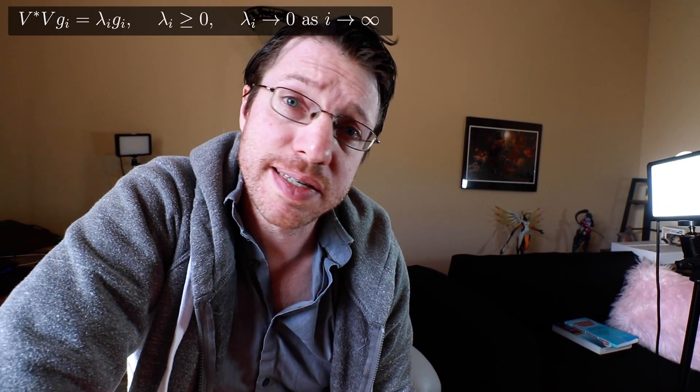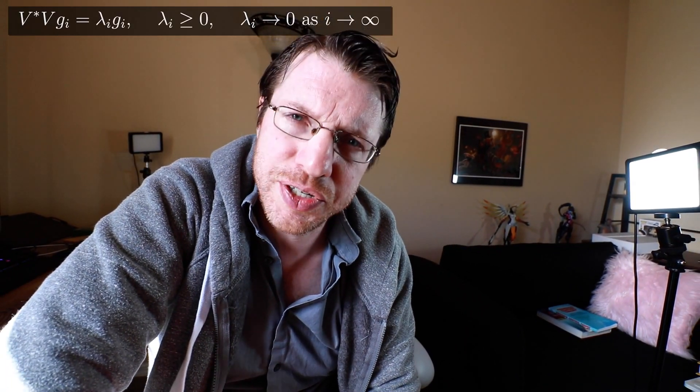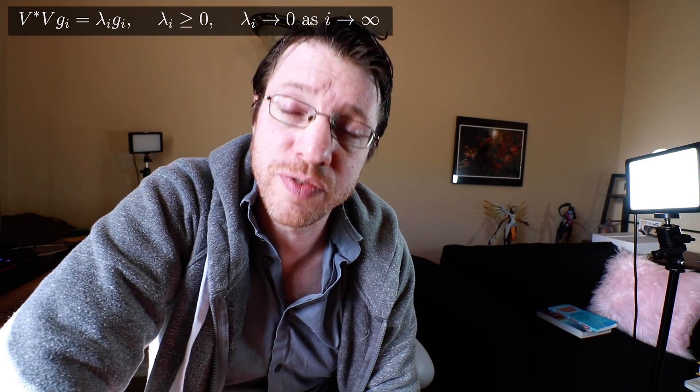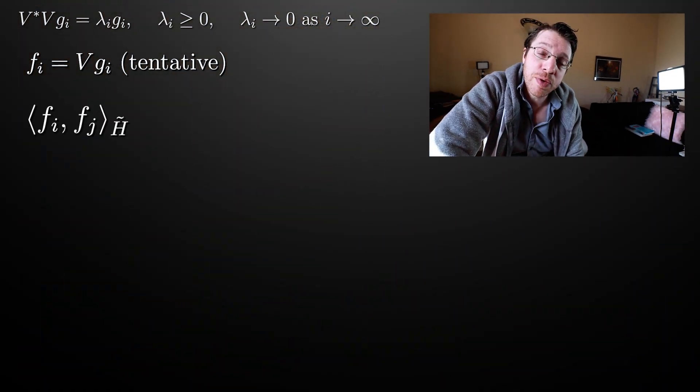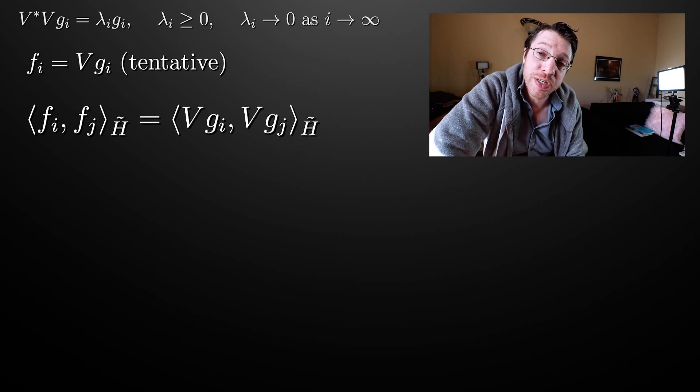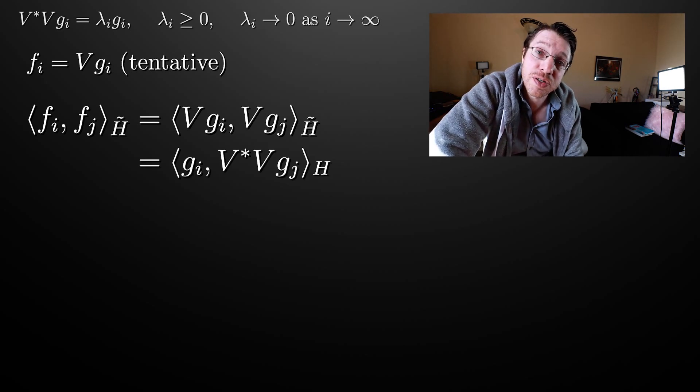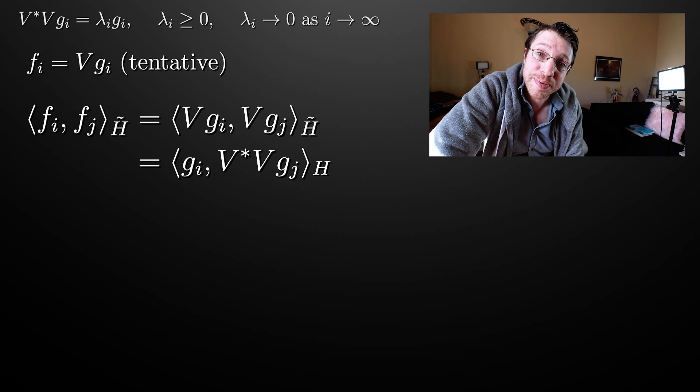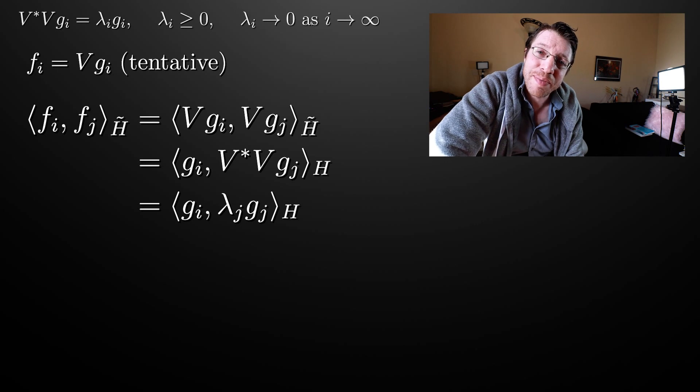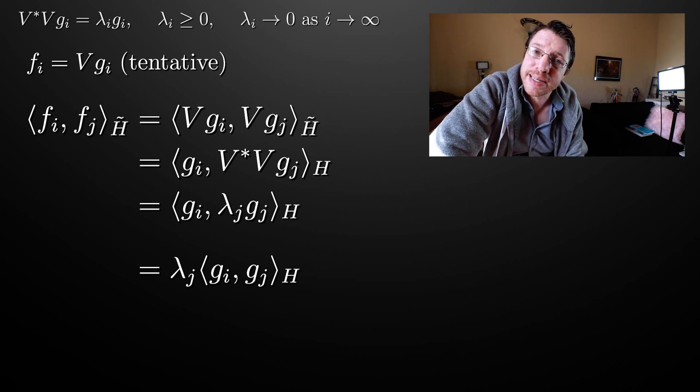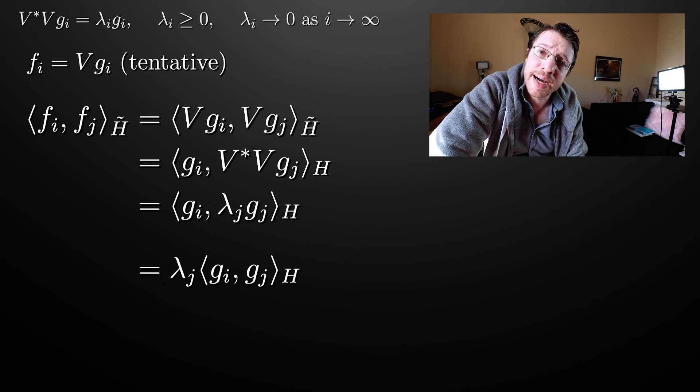We are going to leverage this eigenbasis that we made for the domain. So let's take a look at a whole bunch of functions in H tilde. And let's define them all to be Fi is equal to V times Gi. So if I take the inner product between Fi and Fj in H tilde, this can be rewritten as V gi and V gj in H tilde. Then we can go ahead and remove V and put it onto the other side using the adjoint relation. So now we get Gi inner product with V star V against Gj. This inner product now is in H. What ends up happening is that Gj is an eigenfunction for V star V. So that means that we get some Lambda J coming out of that. And now we can go ahead and pull that out of our inner product. And so what you're left with is Lambda J times the inner product between Gi and Gj.